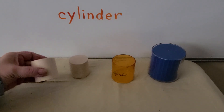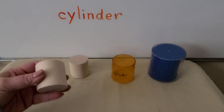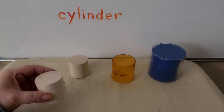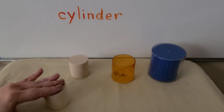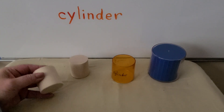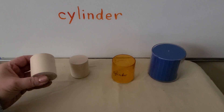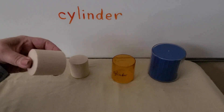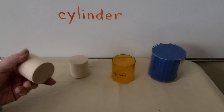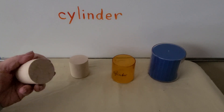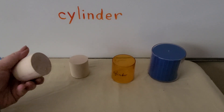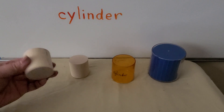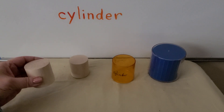This is a cylinder. A cylinder has two flat surfaces — a flat surface on top and a flat surface on the bottom — so we can see they're on each side. And it has a curved surface going around. It has both flat surfaces and a curved surface.